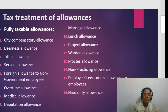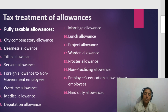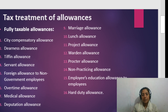Further fully taxable allowances include: Tiffin allowance, servant allowance, foreign allowance to non-government employees — non-government employees are fully taxable. Foreign allowance to government employees is tax-free. Also fully taxable: overtime allowance.